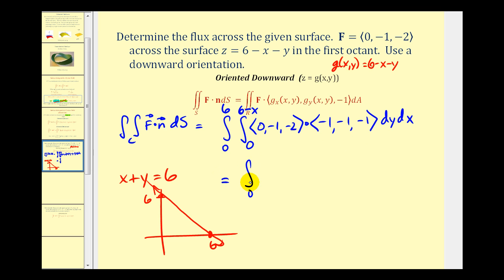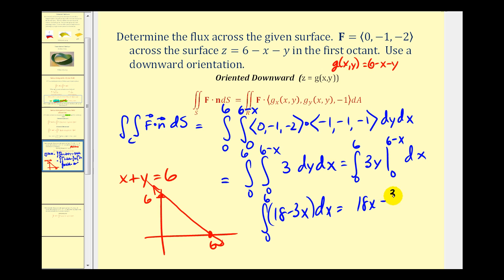Let's go ahead and determine this dot product. We're going to have zero plus one plus two. That'll be three. And from here, it'll be pretty straightforward. We'll have three y. So when y is equal to six minus x, we'll have three times six and three times negative x. That'll be eighteen minus three x. And when y is zero, we have zero.